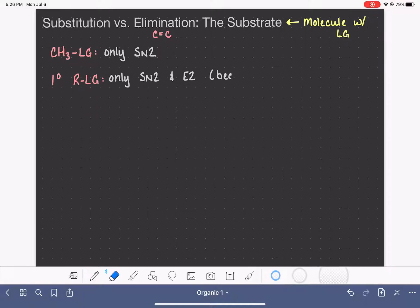It cannot do SN1 and it cannot do E1 because both of those mechanisms require a carbocation. Actually, we are going to make this for both the methyl and the primary because neither of these can form the carbocation that is necessary for E1 or SN1. So with the primary alkyl halide or whatever your leaving group is, there's only two possibilities. That's not quite so bad.